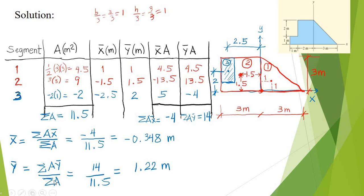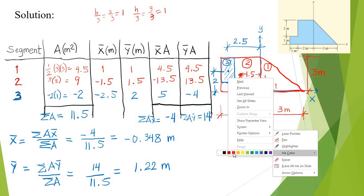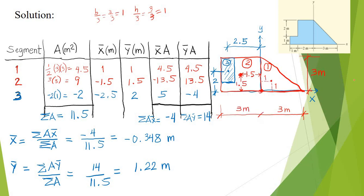To locate the centroid on the diagram: we have negative 0.348, so to the left — negative 0.348 — and 1.22 upward, placing the centroid somewhere here. This is now the location of our centroid for this particular object.